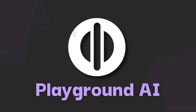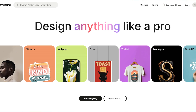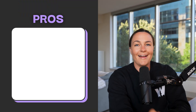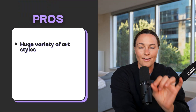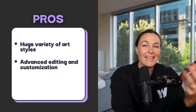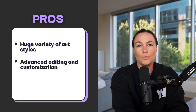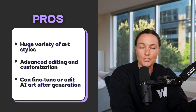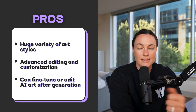Now let's get into tool number five, which is Playground AI. Playground AI is a creative powerhouse — you can have deep control over colors, style, and composition, perfect if you want something really unique. Pros include a huge variety of art styles, advanced editing and customization tools, and the ability to fine-tune or edit AI art after generation.